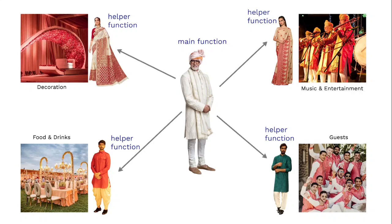This is how functions work in C++ or in any programming language. In C++ we can have two different types of functions. The first type is called a user-defined function and the second type is called a library function. Let me quickly explain the difference using the same wedding example.